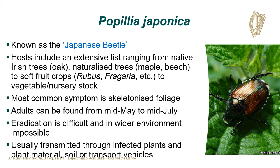Popillia japonica is known as the Japanese Beetle. It has an extensive list of host plants ranging from native Irish trees such as oak, to naturalised trees like maple and beech, to soft fruit crops such as Rubus or strawberry, and to vegetable and nursery stock. The most common symptom is skeletonized foliage. The adults can be found from mid-May to mid-July. Eradication is difficult and in the wider environment is next to impossible. Popillia japonica is usually transmitted through infective plants, plant material, soil or transport vehicles.